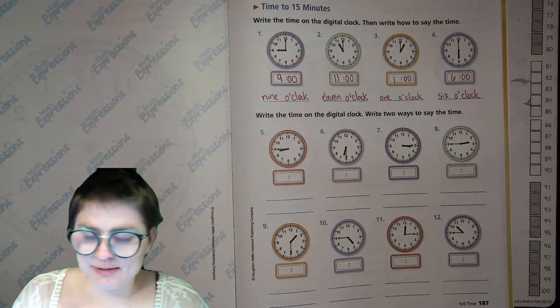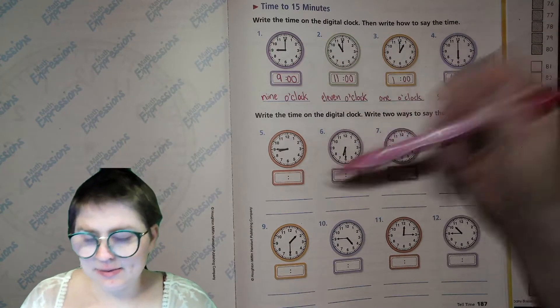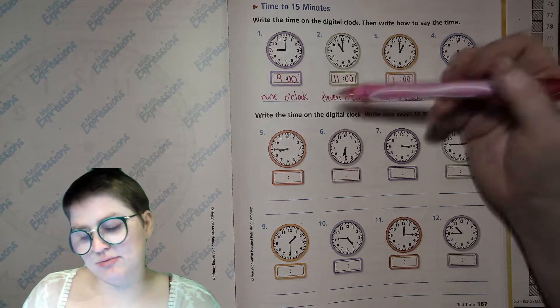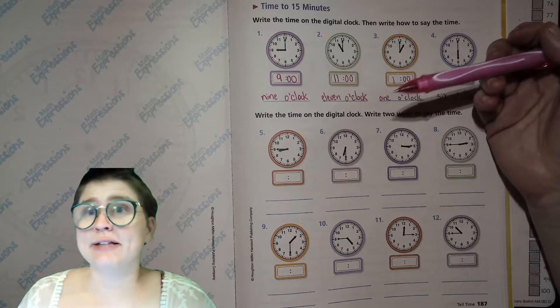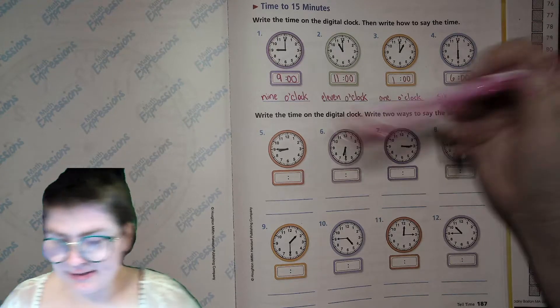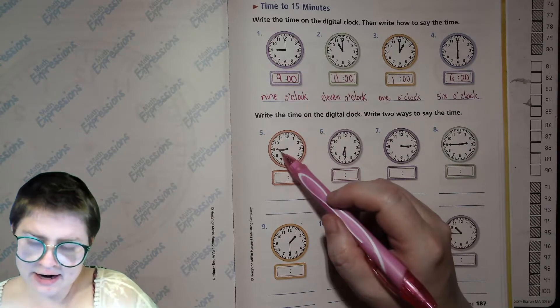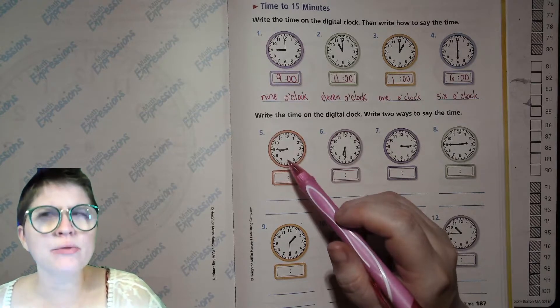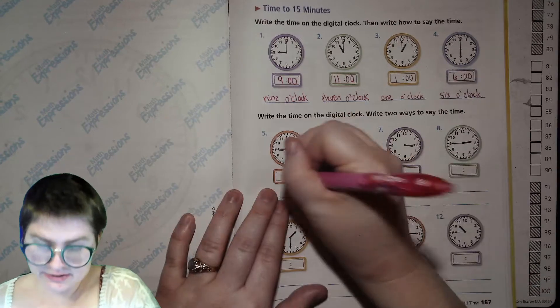Now we're going to put that on a digital clock, which is what this looks like right there. And then we're going to write two different ways to say that time. So this will be like 45 minutes after 8 or something like that. So here, take a look. Our hour hand is not at the 9 yet. It's almost 9 o'clock, but not quite, which means it's still 8 o'clock. So 8.